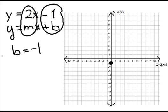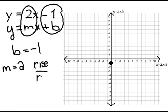My next step is the slope, and I know the slope is 2, because I get it from right here. Remember, the slope is rise over run, so I need to write this as a fraction. Anytime we have a whole number, we simply put a 1 underneath it — 2 over 1.